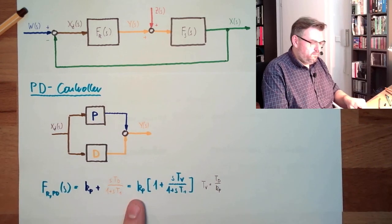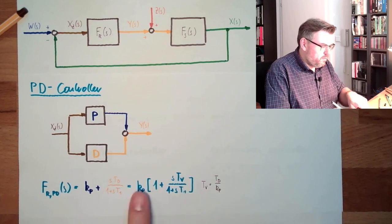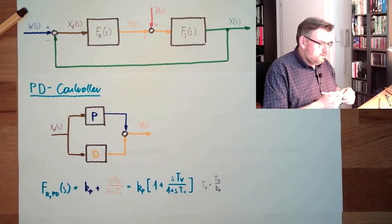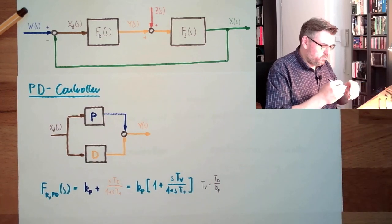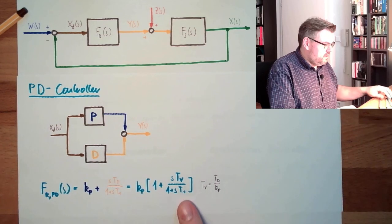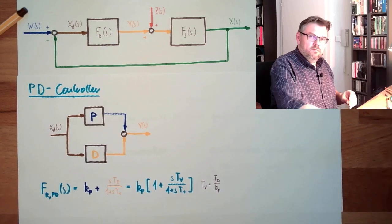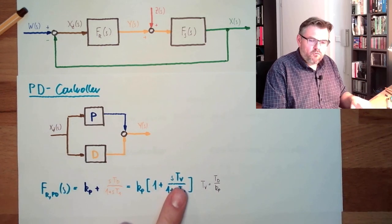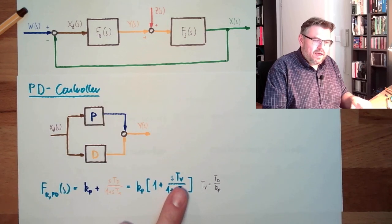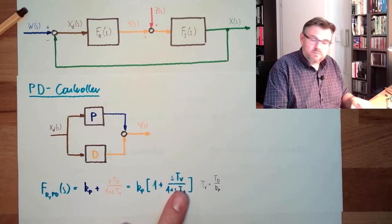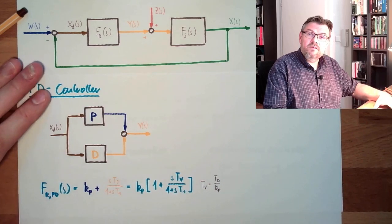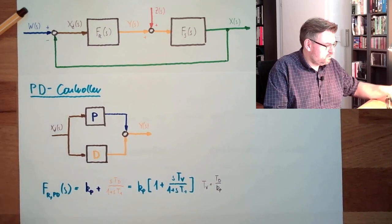So KP, proportional gain factor. T1 is just a filter time, and TV is called Vorhaltezeit in German, and in English sometimes lead time, or often also derivative time. These are the terms.